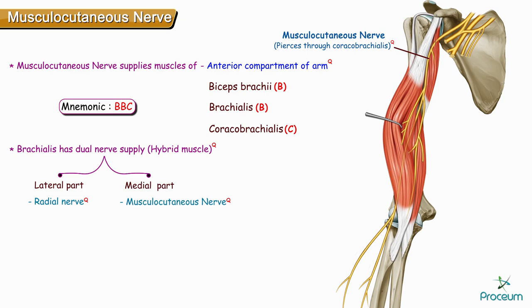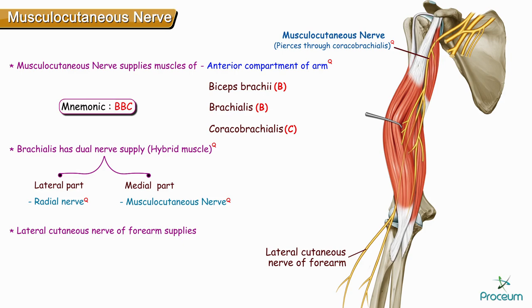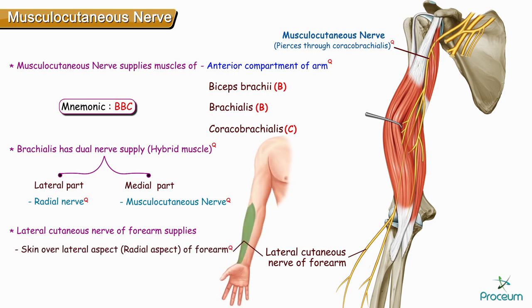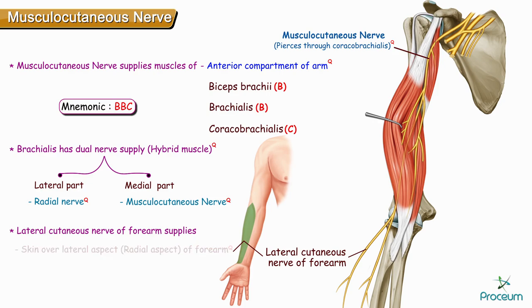Musculocutaneous nerve also gives rise to the lateral cutaneous nerve of the forearm, which supplies the skin over the lateral aspect of the forearm. So the muscular part supplies the anterior compartment of the arm, and the cutaneous part supplies the skin over the lateral aspect of the forearm through the lateral cutaneous nerve of the forearm.